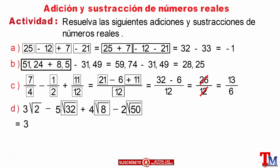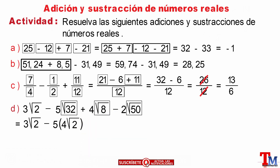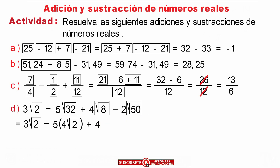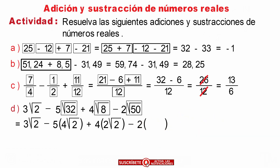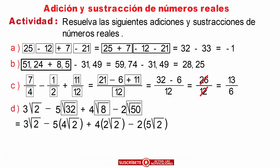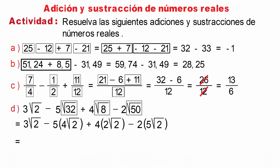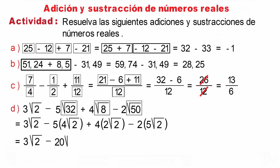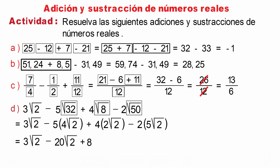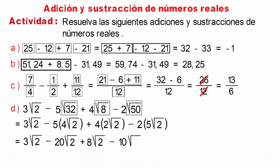We will leave 3 square root of 2, minus 5 times 4 square root of 2, plus 4 times 2 square root of 2, minus 2 times 5 square root of 2. Solving the multiplications, we leave: 3 square root of 2, minus 20 square root of 2, plus 8 square root of 2, minus 8 square root of 2, minus 10 square root of 2.